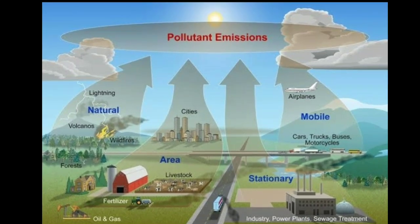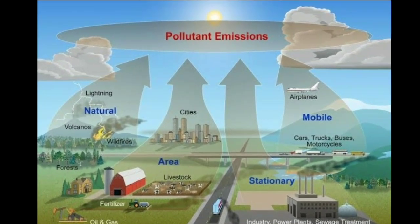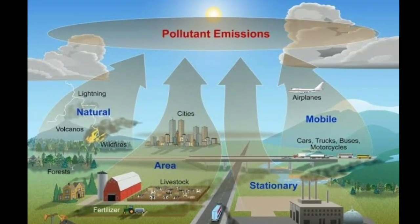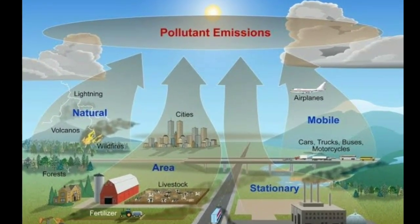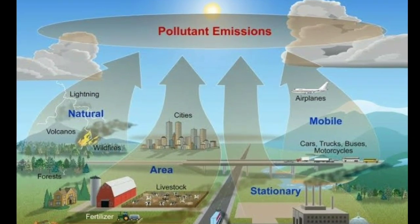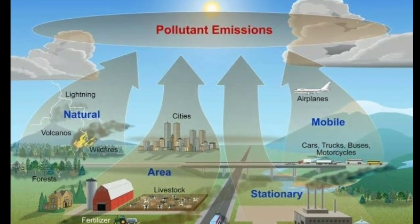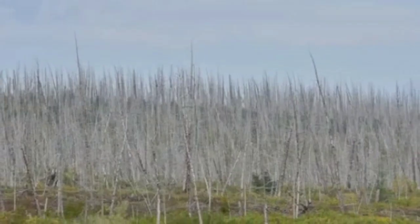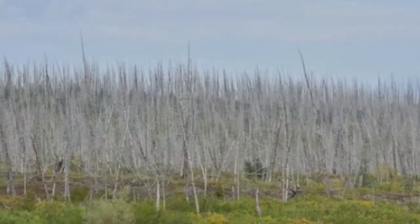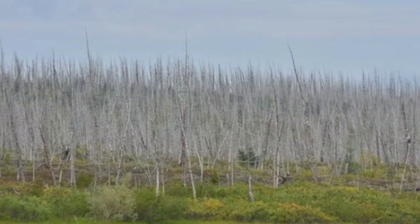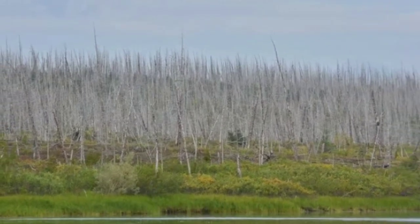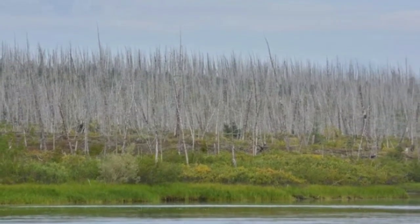Two: acid rain. Acid rain is caused when chemical reactions happen between air pollutants and water and oxygen very high in the air. It causes severe damage to plants, animals and the soil.